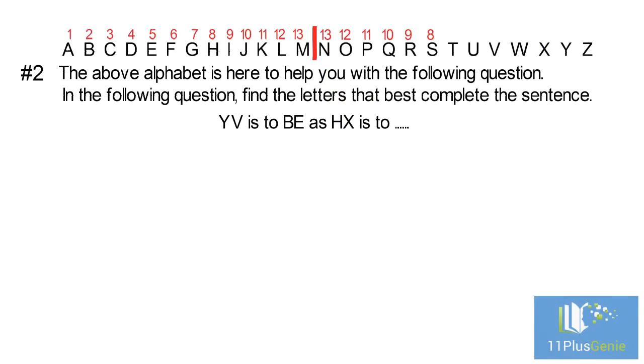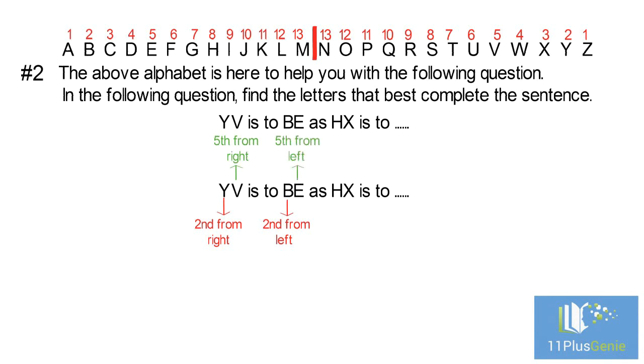If we now look at the first letters of each pair, we see that Y is the second letter from the right and B is the second letter from the left. The second letters of each pair are related in the same way. V is the fifth letter from the right and E is the fifth letter from the left.